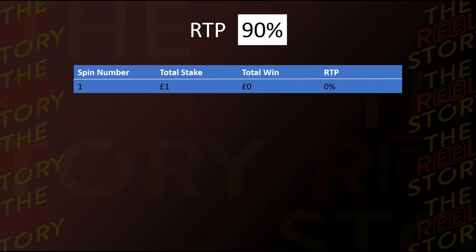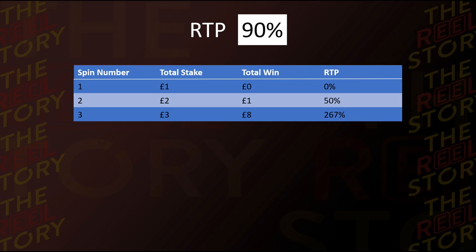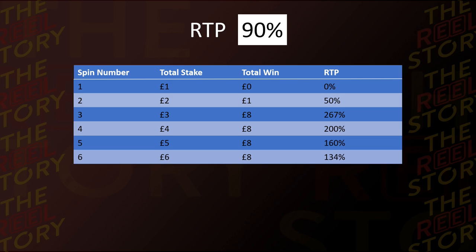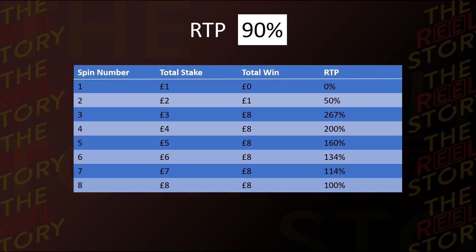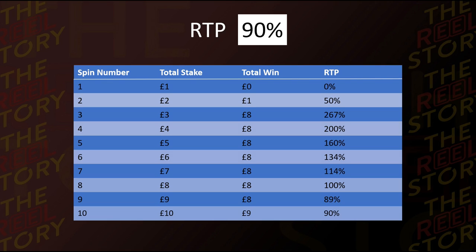As an example, let's go through 10 spins in this type of scenario. We're betting £1 per spin. On the first spin we win nothing so our RTP is 0. On the next spin we win £1, so we've staked £2 and won £1 — a 50% return. On the next spin we win £7, so total win is £8 on a £3 stake — that's 267% return. People think this makes the game think it's paid out too much, so it stops paying for the next spins. The RTP comes down as we put more money in and win nothing, until eventually on the ninth spin we've gone under 100% RTP, and then it pays out again to massage the numbers back toward 90%.